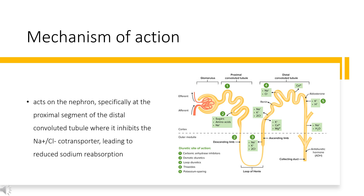Interestingly, it is likely that thiazide-like diuretics such as Indapamide have additional blood pressure-lowering mechanisms unrelated to diuresis. This is evidenced by the observation that the antihypertensive effects of thiazides are sustained 4–6 weeks after initiation of therapy, despite recovering plasma and extracellular fluid volumes. Some studies have suggested that Indapamide may decrease responsiveness to pressor agents, while others suggest it can decrease peripheral resistance. Further studies are needed to investigate the medication's ability to decrease peripheral vascular resistance and relax vascular smooth muscle.